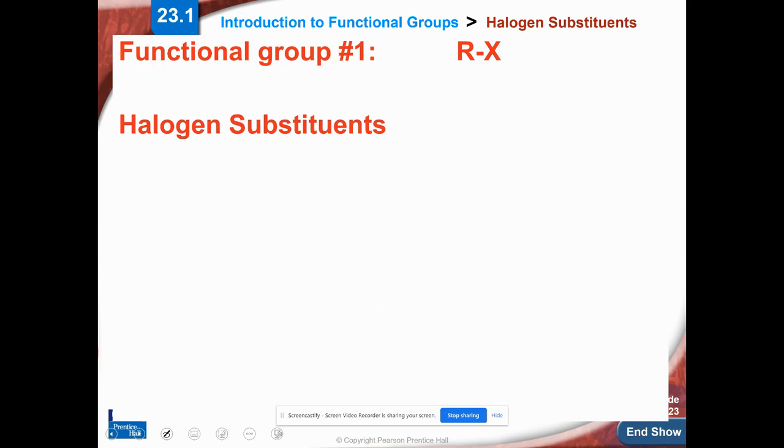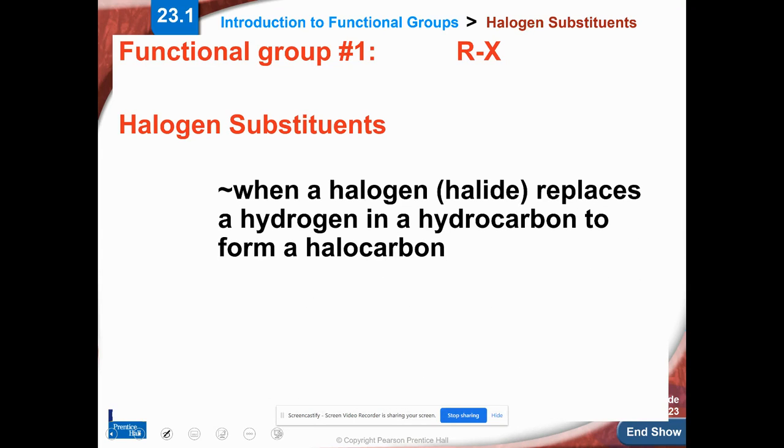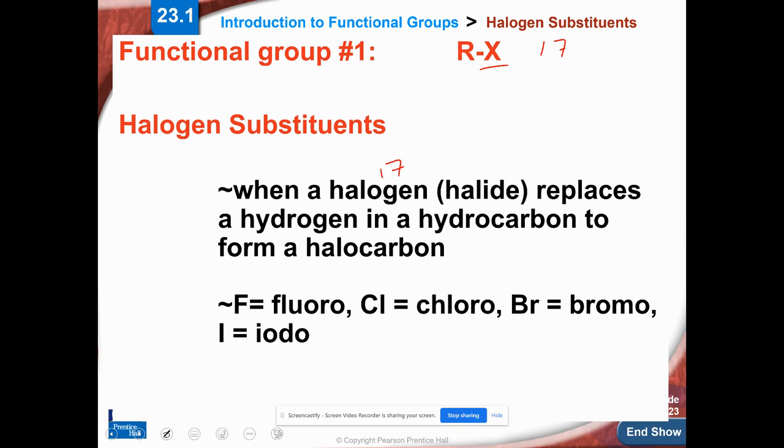So now let's take a look at our first organic functional group, right, halogen substituents, right? So a halogen replaces a hydrogen in a hydrocarbon, and we get what's called a halocarbon. And so this X is going to be anything, again, like I said, from group 17 on the periodic table, right, the halogens, right, halides, and we call them halocarbons.